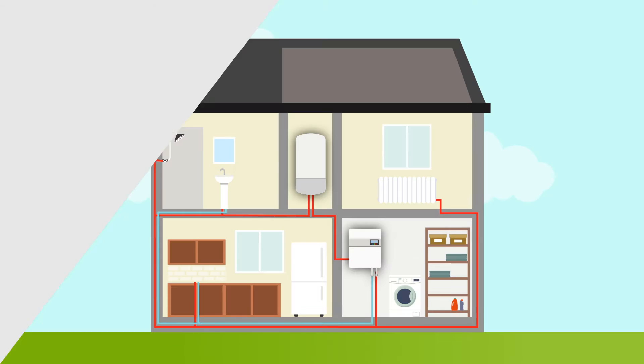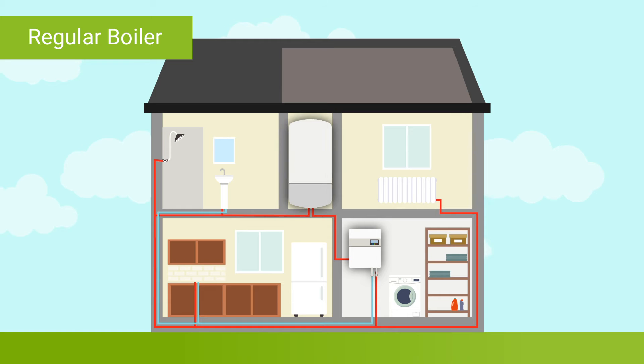Regular boilers don't just need a hot water cylinder to provide hot running water to a property. They also need a cold water feed tank to act as their water supply. The feed tank is usually located in the loft or attic and will generally take up a lot of space.